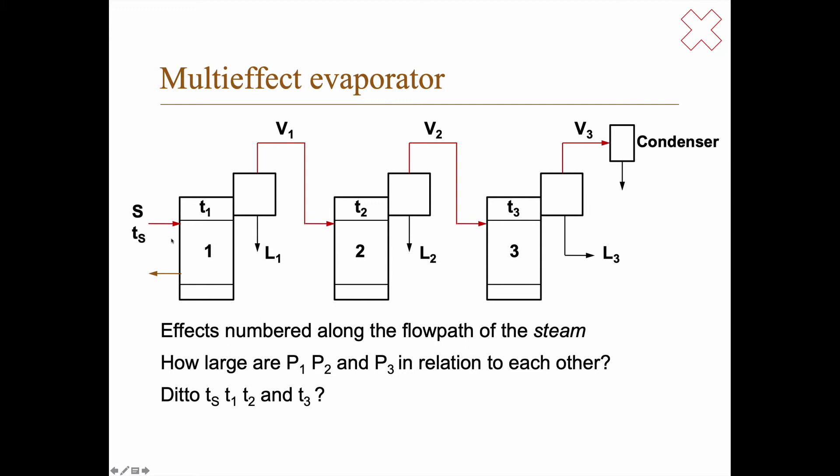But the only way to get that, if we have the same basic stuff on both sides, if we have water on the steam side and then we have water being evaporated, the only way to have T1 larger than T2 is to have P1 larger than P2. So the pressure here, P1 is larger than P2 and P2 is larger than P3.